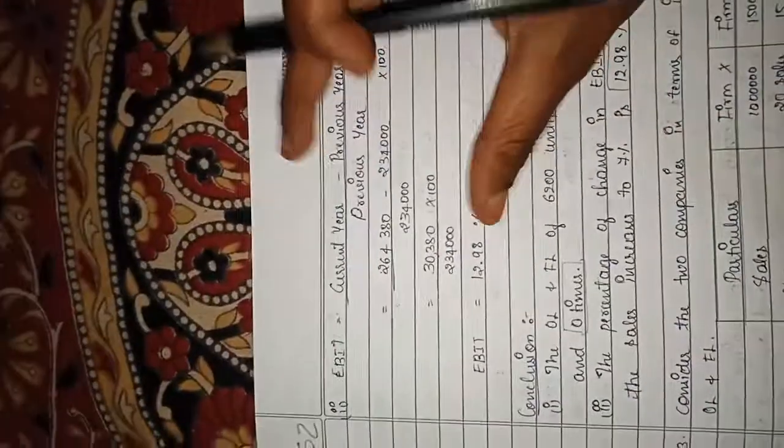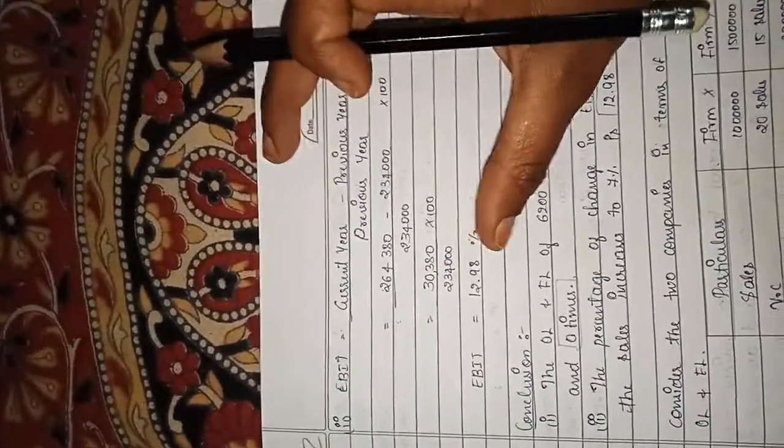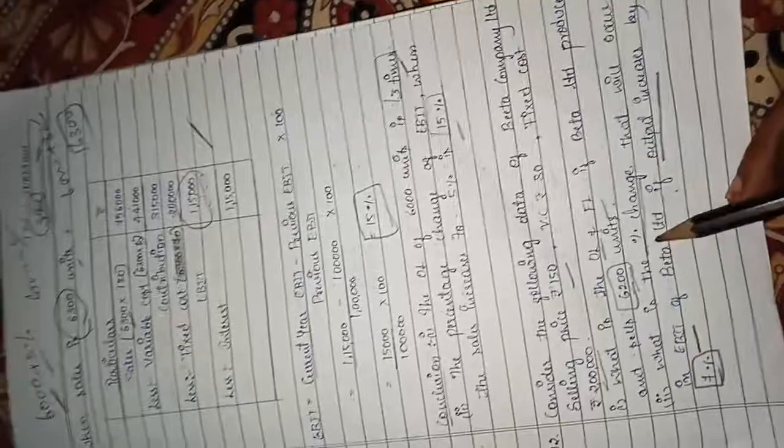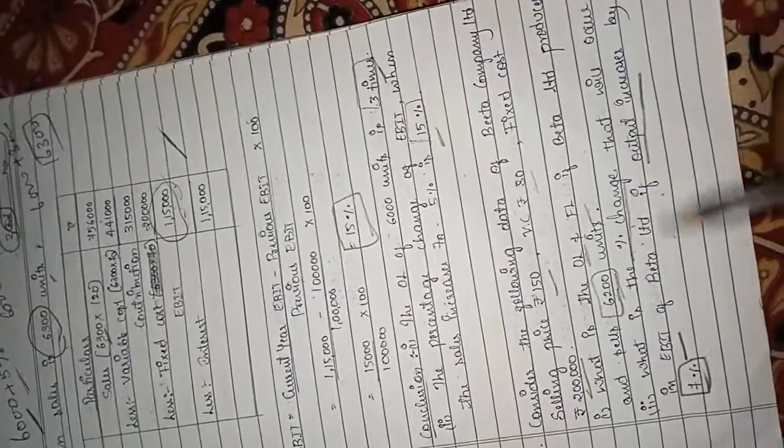This is the actual calculation for question number two, situation two. The question asks: what is the percentage change that will occur in EBIT of Beta Limited if output increases by seven percent?